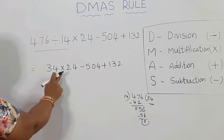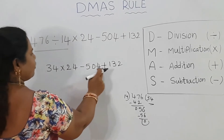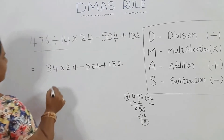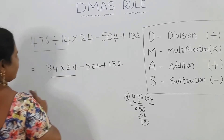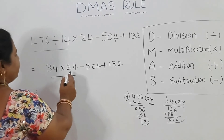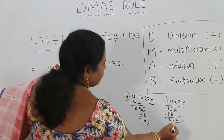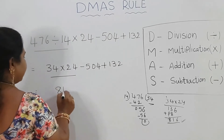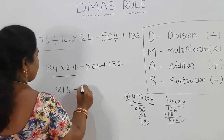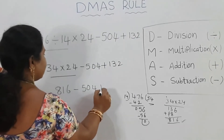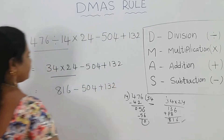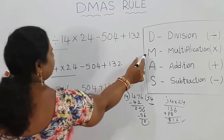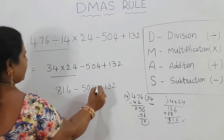14 times 3 is 42, 14 times 4 is 56 — so 476 divided by 14 equals 34. Write 34 here. Next, multiplication: 34 into 24 equals 816. So we have 816 minus 504 plus 132.